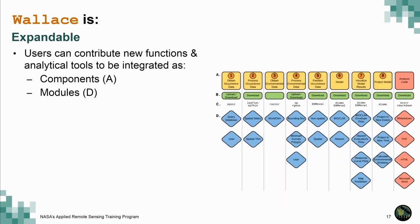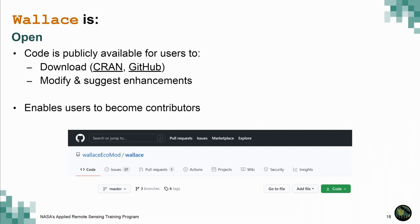Wallace is expandable. It is built in a modular way, with components representing the larger steps in the modeling process, and within each component there are modules — different options for running each step. Because of this modular structure, we can add components or modules and make the software grow. Finally, Wallace is open — the code is publicly available for all users on CRAN and GitHub, and users are able to modify and suggest enhancements, enabling users to eventually become contributors as well.